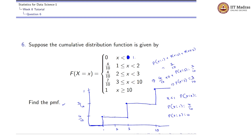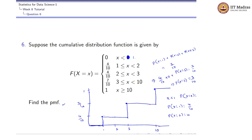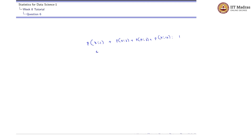From 3 to 10 we won't have any spike, and exactly at x = 10 we have a spike. So P(x=1) + P(x=2) + P(x=3) + P(x=10) = 1, since the cumulative probability for x ≥ 10 equals 1. We know P(x=1) = 4/10, P(x=2) = 0, P(x=3) = 3/10. So P(x=10) = 1 − (4/10 + 3/10) = 1 − 7/10 = 3/10.